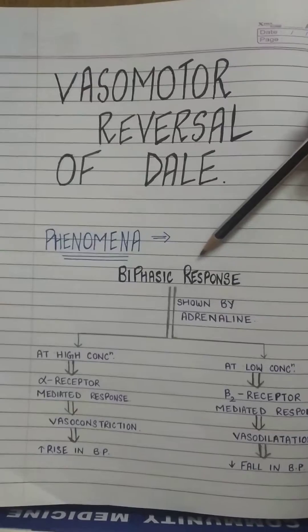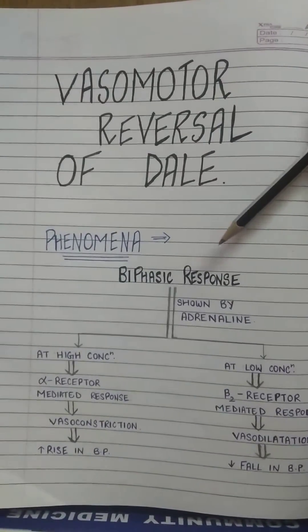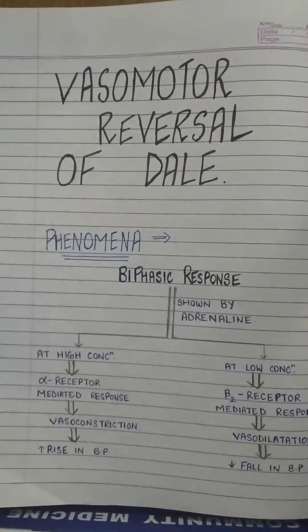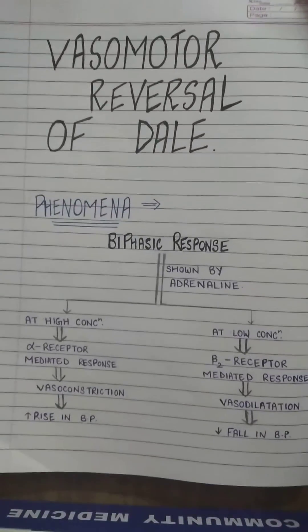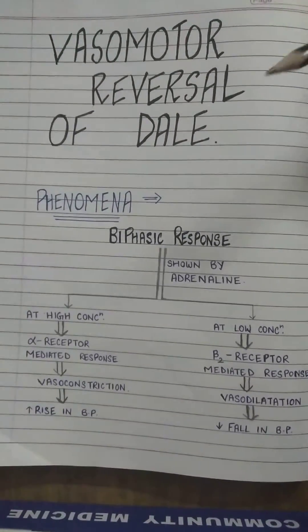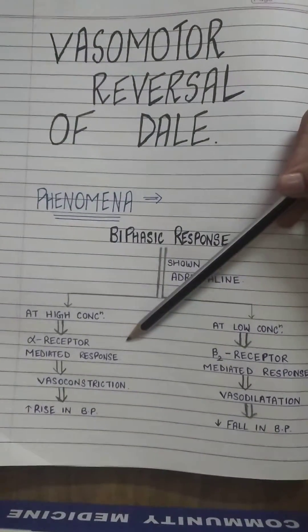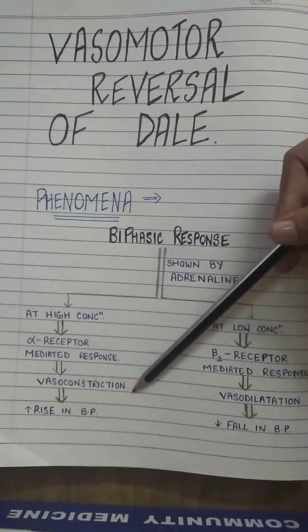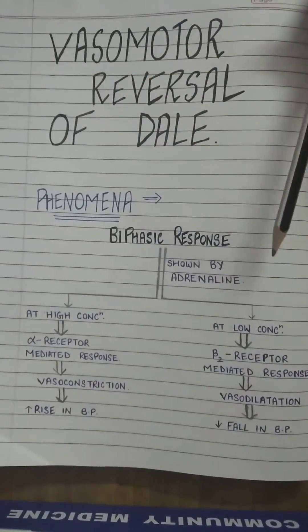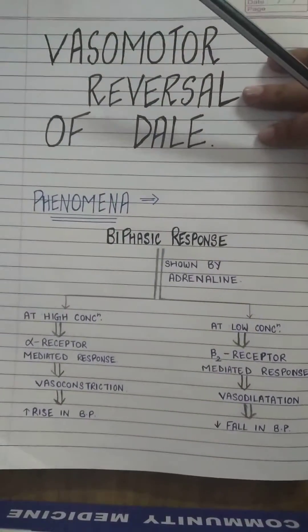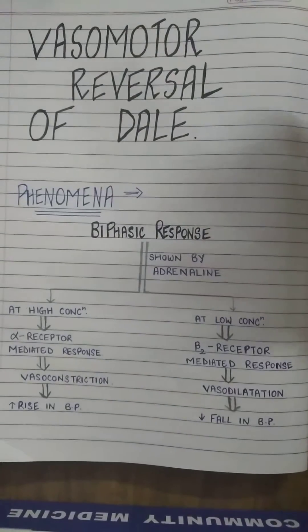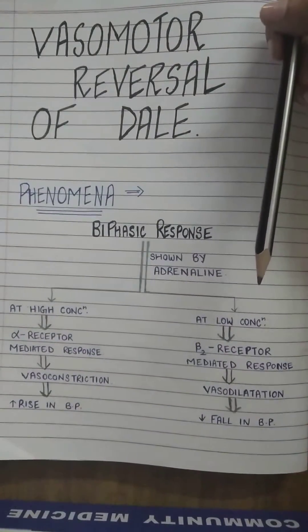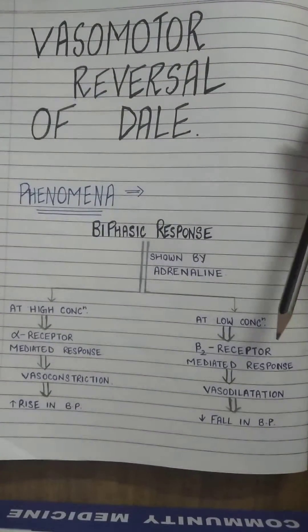By biphasic response we mean that adrenaline shows its action through both alpha and beta receptors. The receptor mediated action depends upon the concentration of adrenaline. At high concentration, the alpha receptor mediated response predominates which will lead to vasoconstriction and cause rise in blood pressure. Whereas at low concentrations, the beta-2 receptor mediated response predominates which will lead to vasodilatation and cause fall in blood pressure.